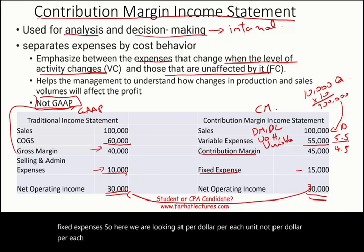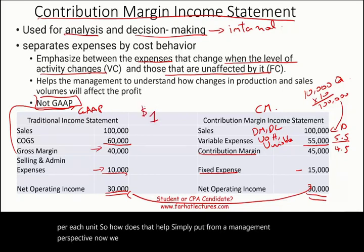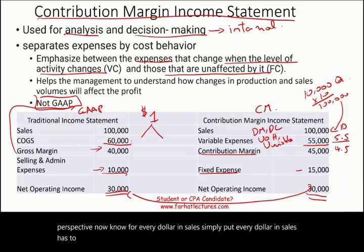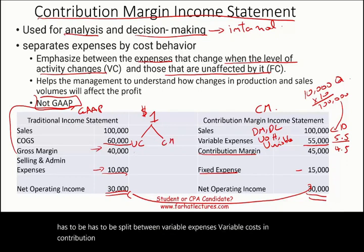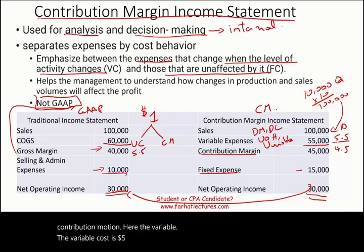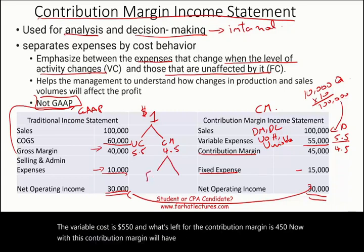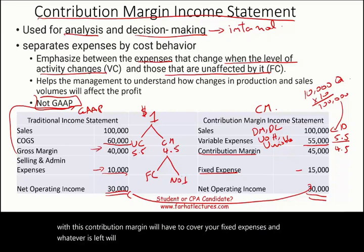How does that help? Simply put, from a management perspective, we now know that for every dollar in sales, each dollar must be split between variable costs and contribution margin. Here, the variable cost is $5.50 per unit, and what's left for the contribution margin is $4.50 per unit. This contribution margin must cover your fixed expenses, and whatever is left is considered net operating income.